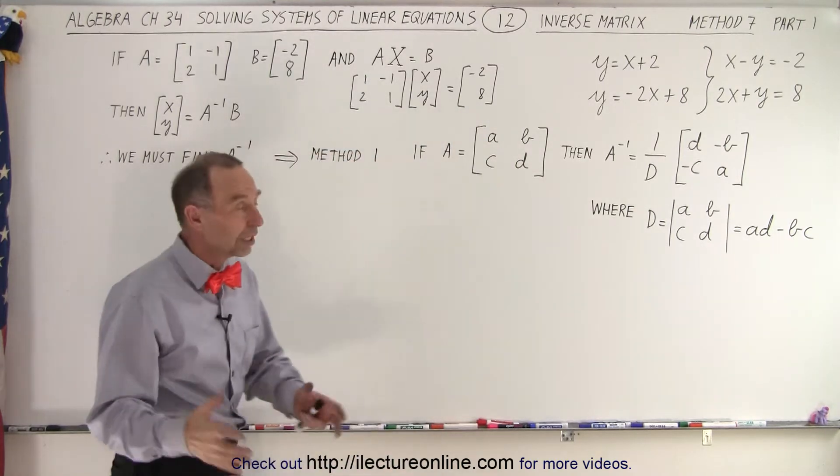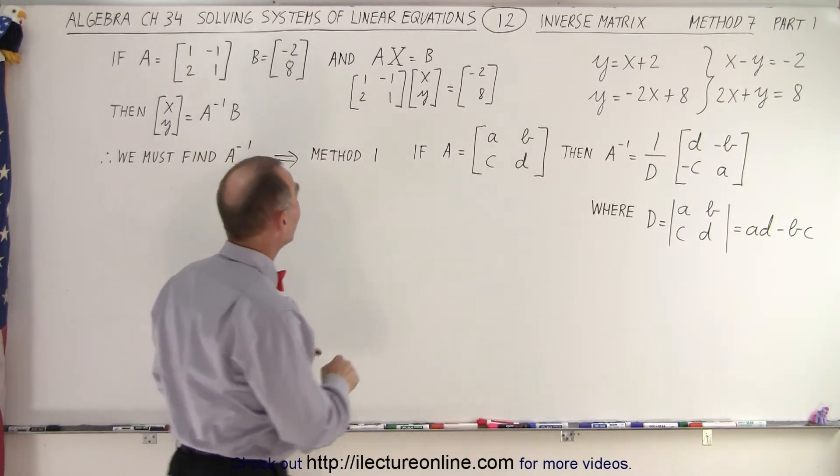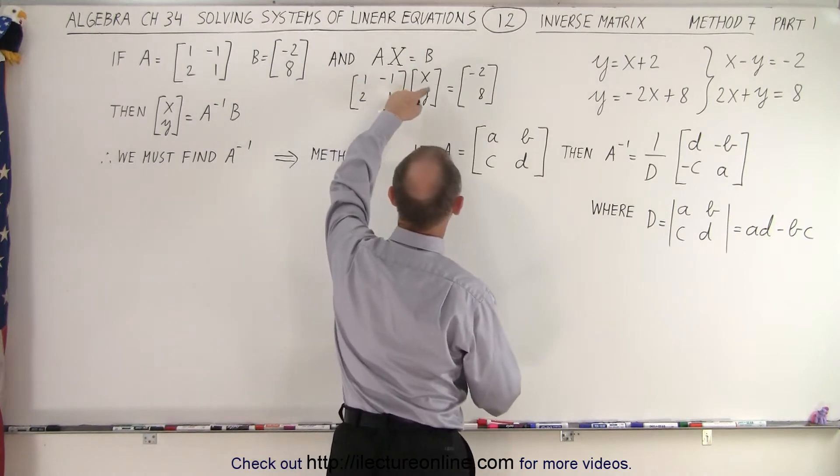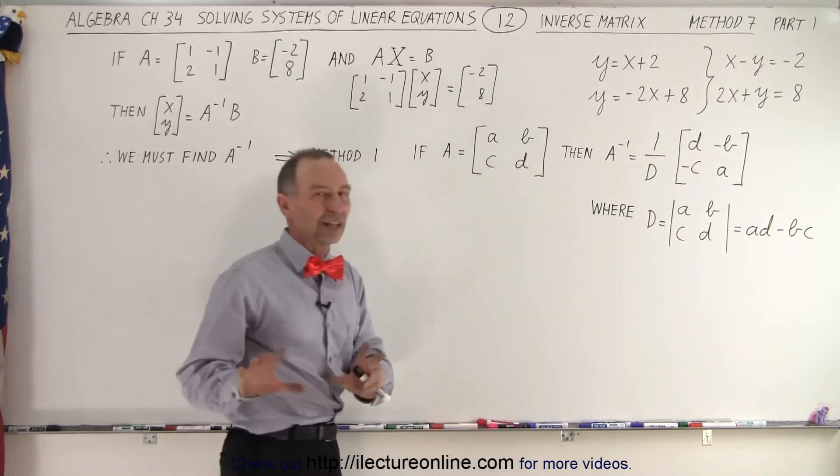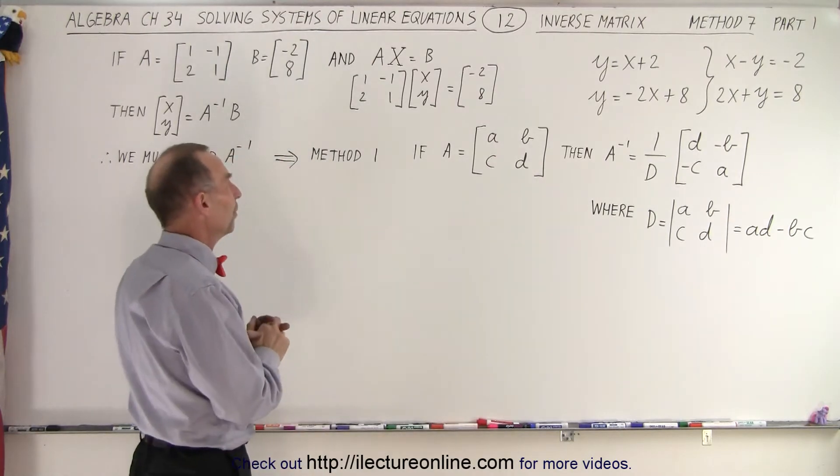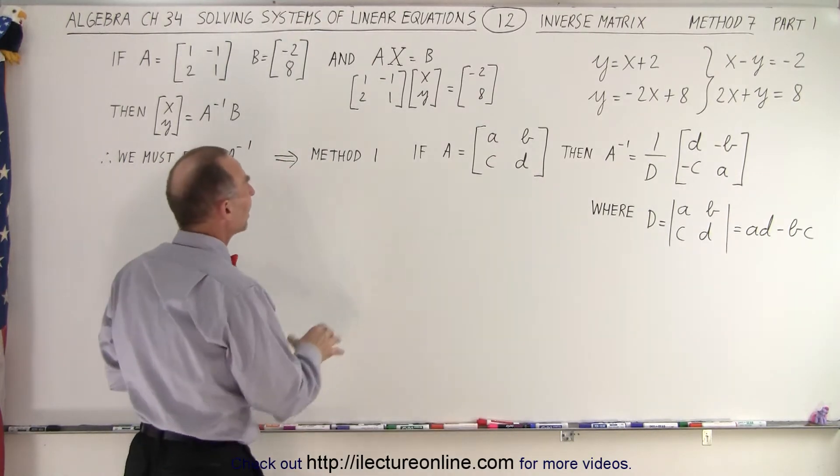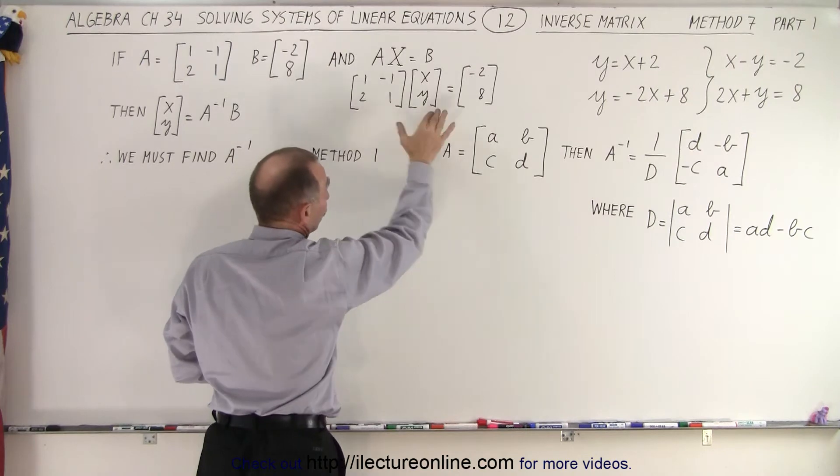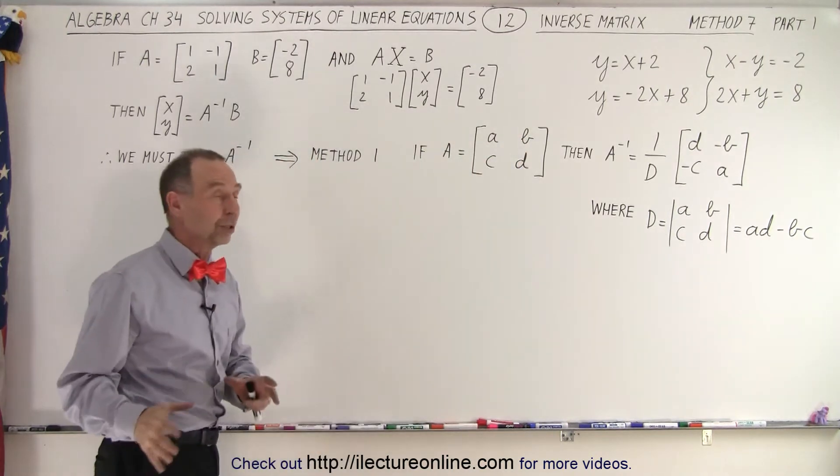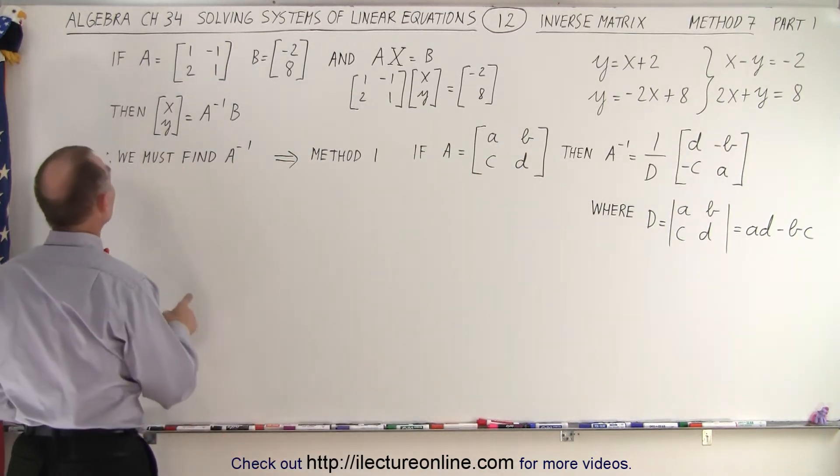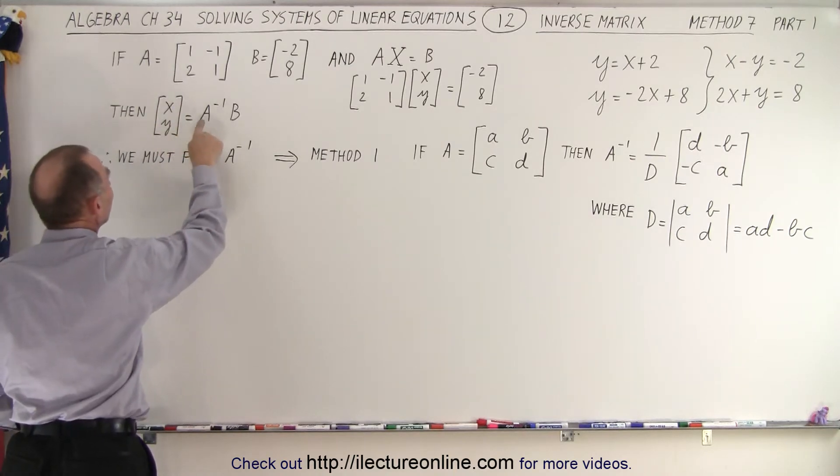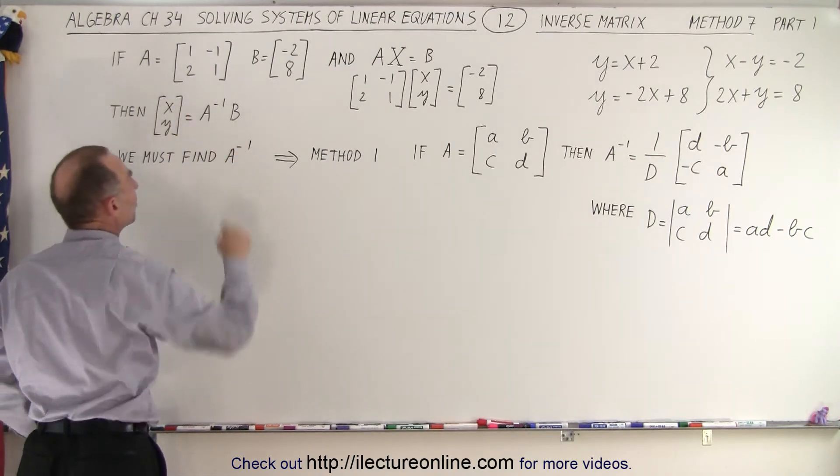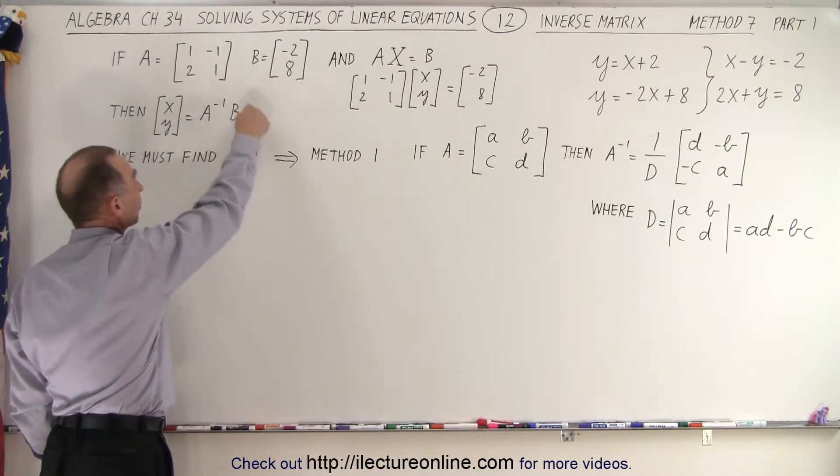Okay, so that is true because notice, if we multiply this matrix by this matrix and set equal to that, we get the original two equations back, just like we showed you a few videos ago. But now they claim that if this is true, and we know that's true because that gives us our two initial equations, then we can say that we can solve for x and y by multiplying the inverse matrix of A times the B matrix. And this is a very simple operation.